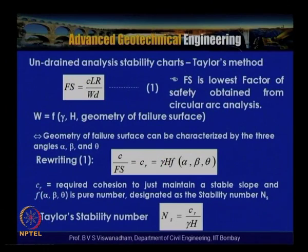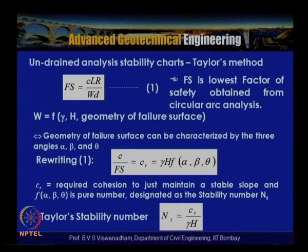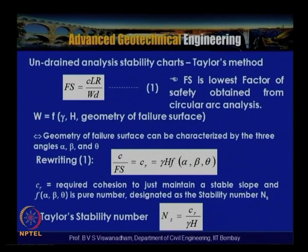Now let us consider slopes in clay. First, let us look into the undrained stability analysis by Taylor's method. From Taylor's method, derived from undrained slope stability analysis, the factor of safety is the lowest factor of safety obtained from circular arc analysis. The weight of the soil portion involved within the failure surface is a function of gamma, the unit weight, the height h, and the geometry of the failure surface.